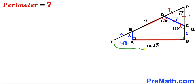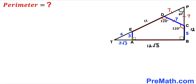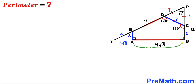Furthermore, the whole BT length is 12 times the square root of 3, whereas the tiny segment TA is 3 times the square root of 3. Therefore, side AB is going to be 12√3 minus 3√3, which gives us 9 times the square root of 3. So AB turns out to be 9√3 units.